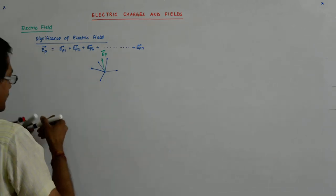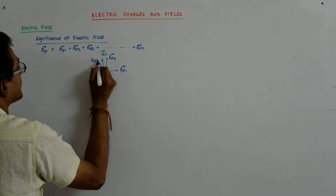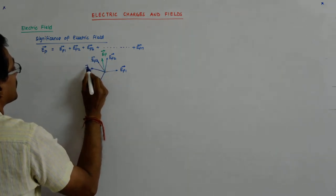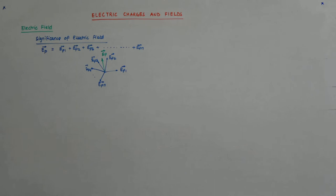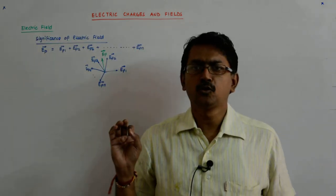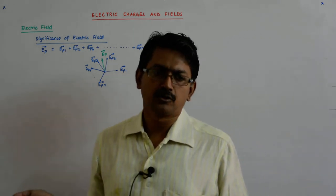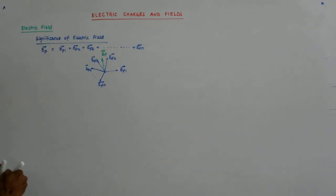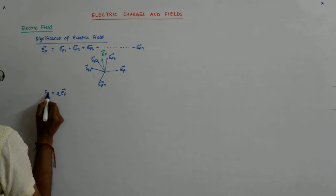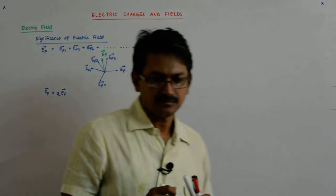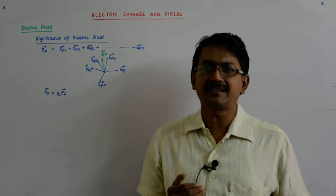The individual fields at point P may be E_p1, E_p2, E_p3, E_p4, ... E_pn. Now, once you know the net field at that point, if I ask you to find the force on a given charge, you simply multiply that charge by E_p to get the force.